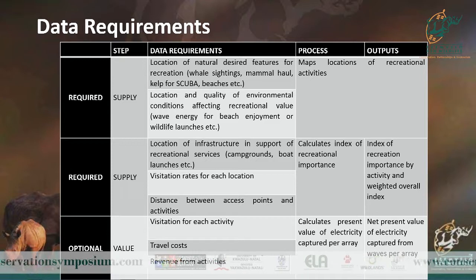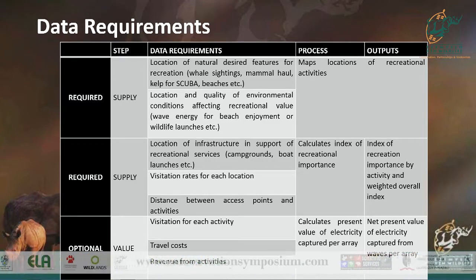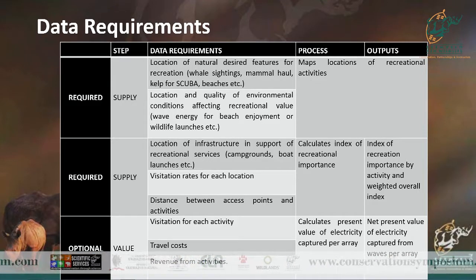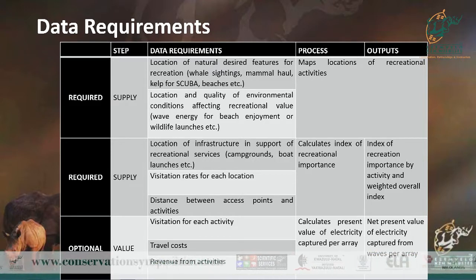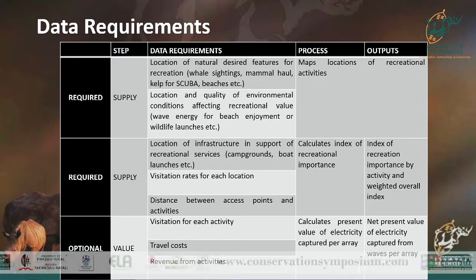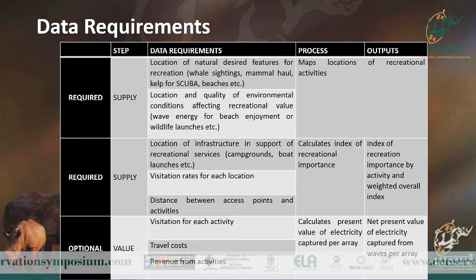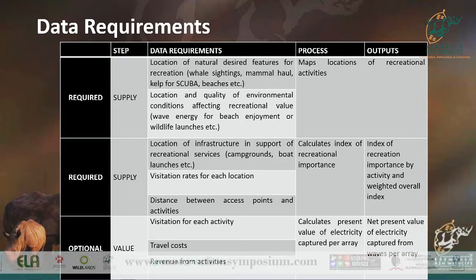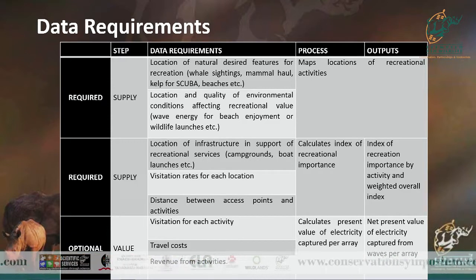This is a table showing the data requirements for the model. When looking at supply, you input the location of desired features — wildlife sightings, beaches, etc. You look at quality and environmental conditions that could affect recreational value, and the output is a general map showing the activities in that geographical area.